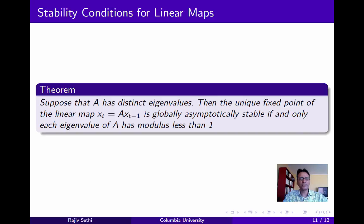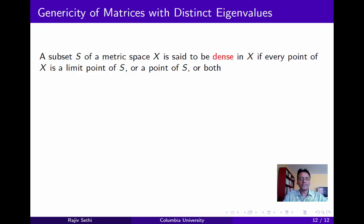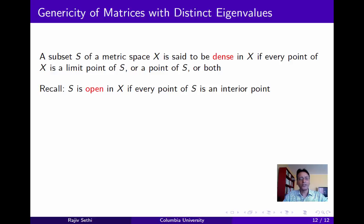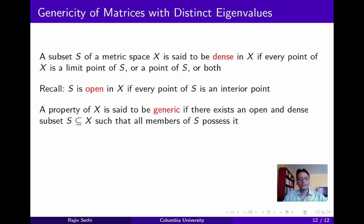The last thing I'd like to do in this segment is to argue that our focus on matrices with distinct eigenvalues is justified, because the property of having distinct eigenvalues is a generic property for matrices. To do this, we need to introduce a concept of genericity. We say that a subset S of a metric space X is dense in X if every point of X is either a limit point of S, or a point of S, or both. Recall that S is open in X if every point of S is an interior point.